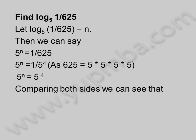Comparing both sides we can see that n is equal to minus 4. So log 1 by 625 to the base 5 is equal to minus 4.